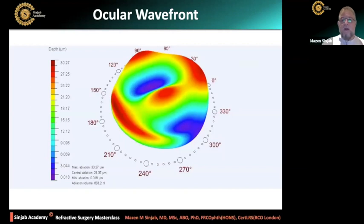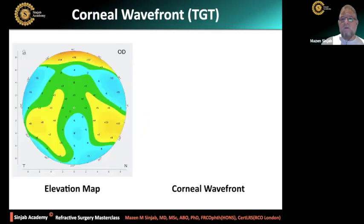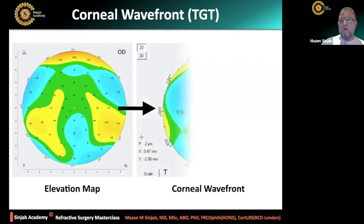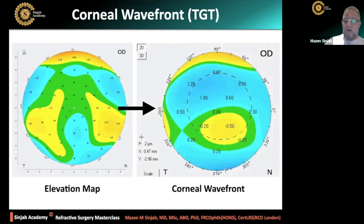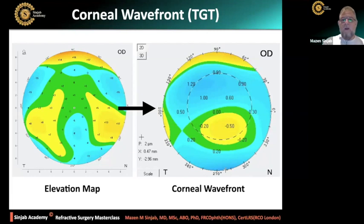This is the profile of the ocular wavefront — similar to topography-guided treatment, but I'll show you the difference. Corneal wavefront is actually topography-guided treatment, because it depends on the elevation map. This is the elevation map of the corneal surface, and this is the corneal wavefront of the same surface. The machine is calculating — not directly measuring — the corneal wavefront from the elevation map. So the treatment is based on the elevation map, very similar to topography-guided treatment. Corneal wavefront is not a real wavefront.